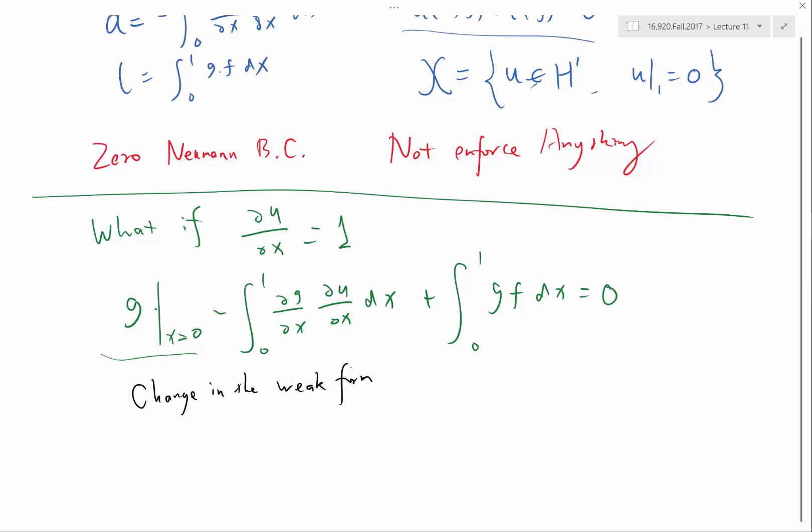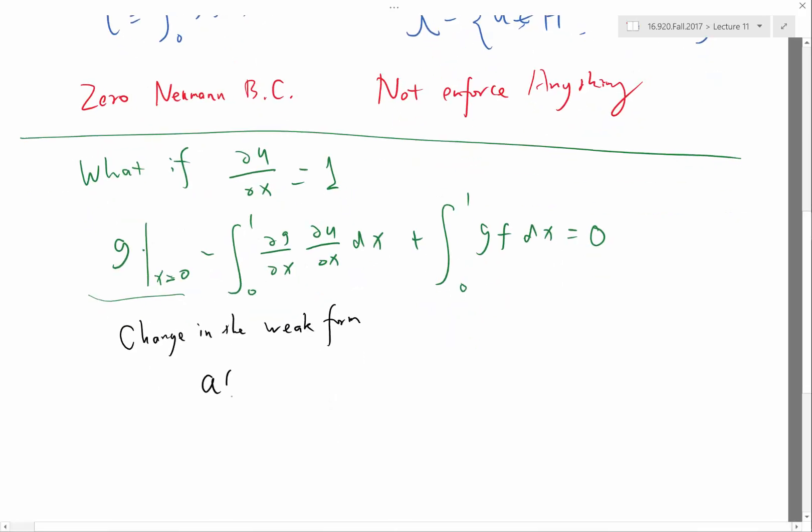All the other places, the boundary condition only changes the space in which we test or we find the solution. This a of u,g plus l of g equal to 0 never changed. But here, it actually did change.